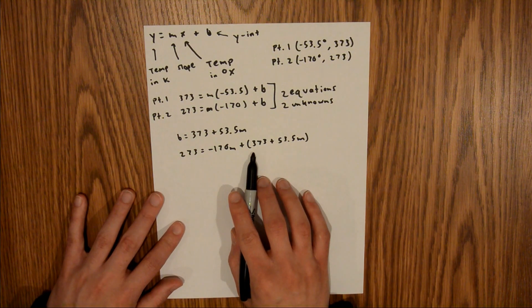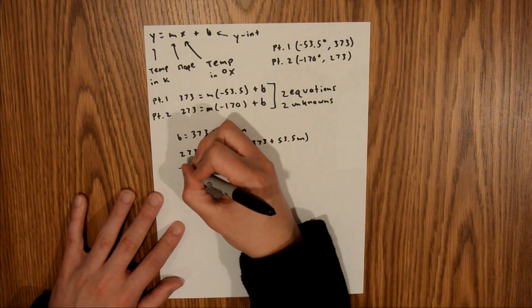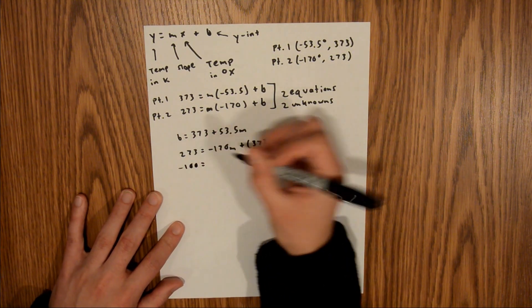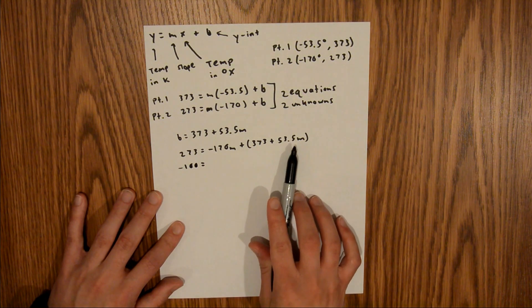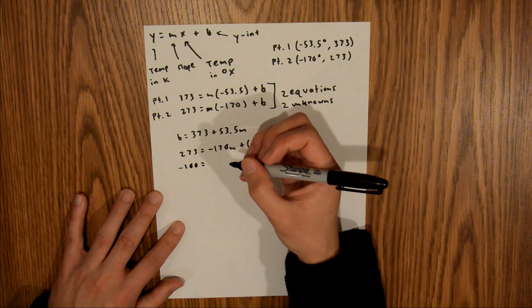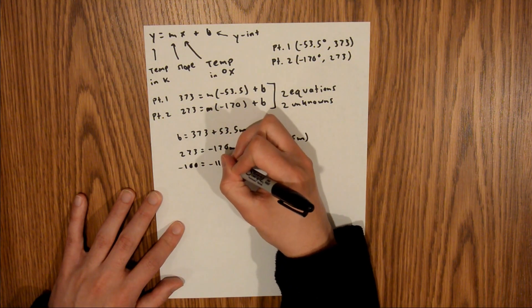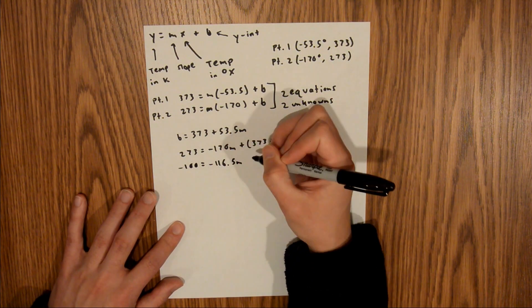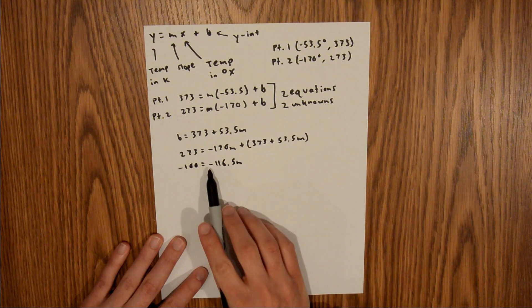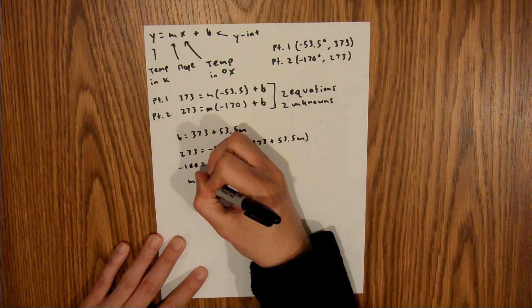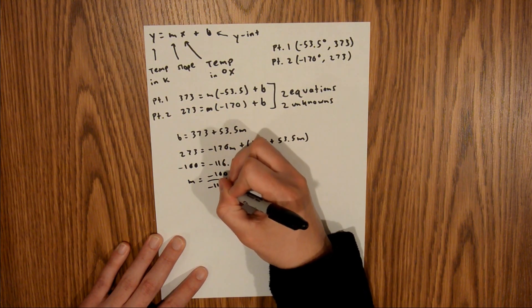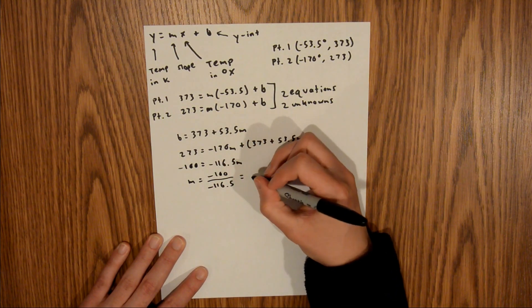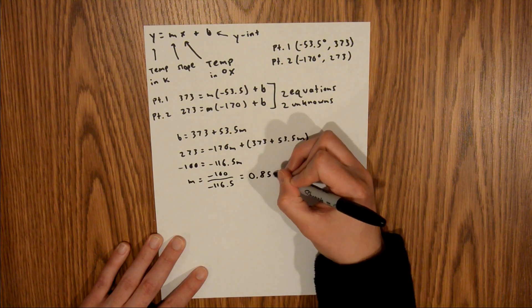So, if I subtract 373 from both sides, that's going to give me negative 100 on this side. And that's going to be equal to negative 170m plus 53.5m, which is going to be equal to negative 116.5m. So, now if I divide both sides by this negative 116.5m, that's going to give me that m is equal to negative 100 over negative 116.5, and that is equal to 0.858.